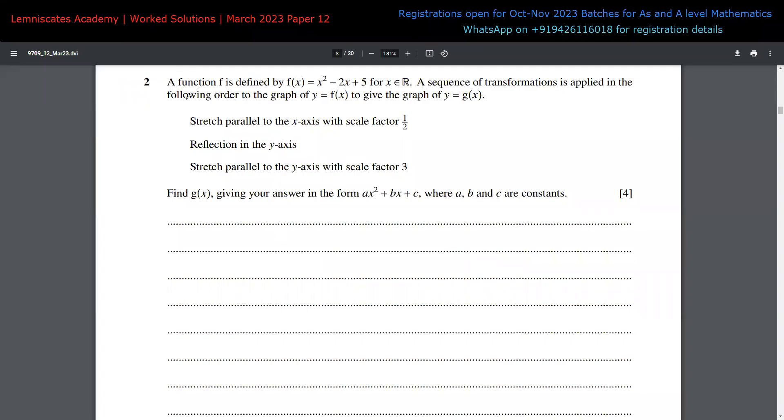Now we are having the second question over here. It says that a function is defined like this for all real values for x, and a sequence of transformation is applied on this function to transform this f(x) into g(x). Here are the function transformations that we are applying on this function to get g(x).